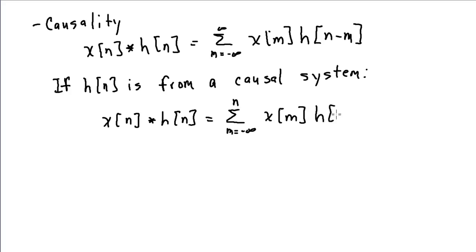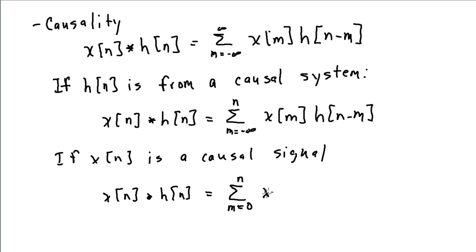If x of n is a causal signal, then this further simplifies. Remember, a causal signal is one that is non-zero only for positive values of its argument. In that case, x of m will only be non-zero for values of m greater than or equal to 0, so I can change the lower limit here to 0. And we can write our convolution summation like this. This is for the general case in which our system is causal and our input is also causal.